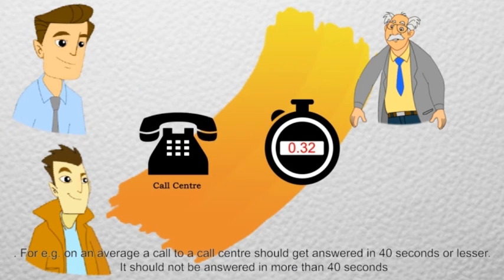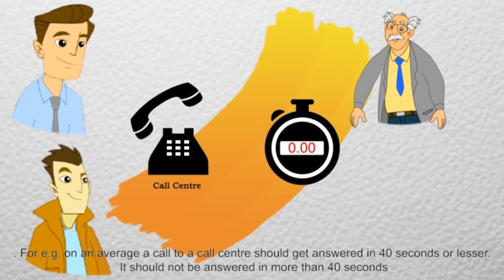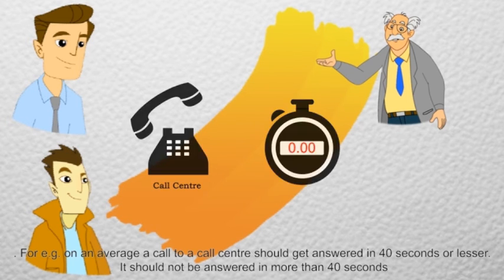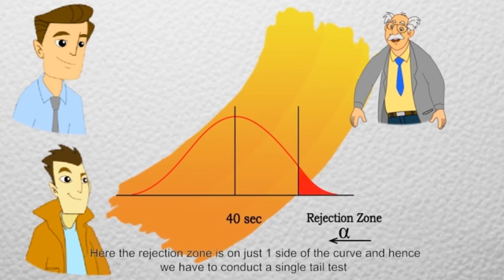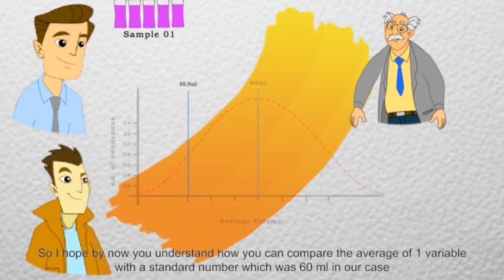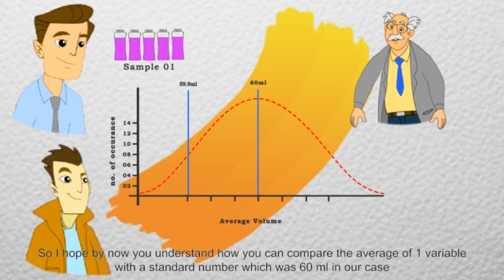For example, on an average a call to a call center should get answered in 40 seconds or lesser. It should not be answered in more than 40 seconds. Here the rejection zone is on just one side of the curve and hence we have to conduct a single tailed test.